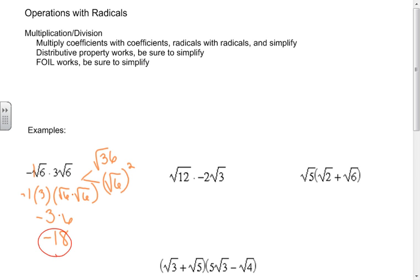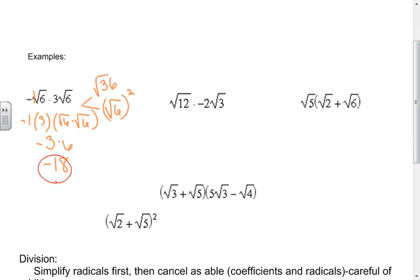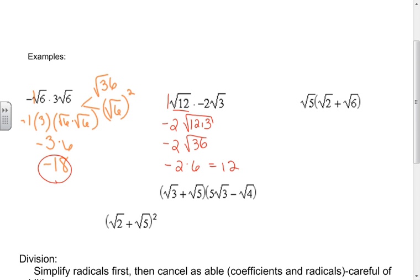In this next example, I have two choices: simplify first and then multiply, or multiply first. You will get the same answer. I have a coefficient of 1, so I have negative 2 times the square root of 12 times 3, giving negative 2 times the square root of 36. Since 36 is a perfect square, that's negative 2 times 6, and I end up with negative 12.